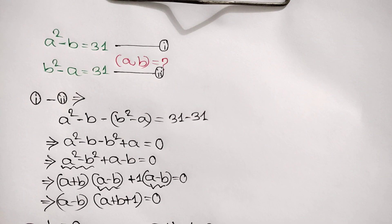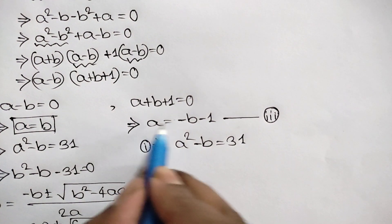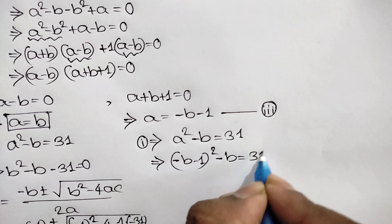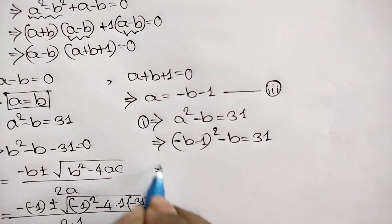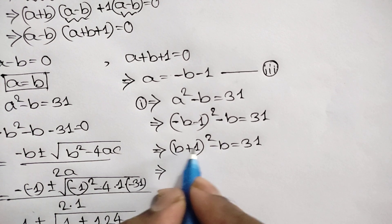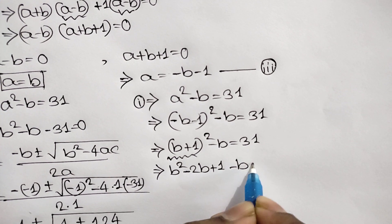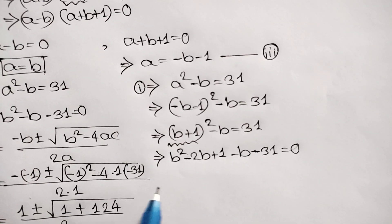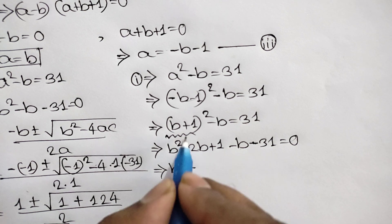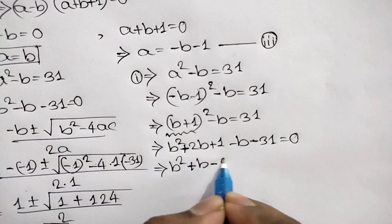Recalling equation 1, A squared minus B equals 31. Since A equals negative B minus 1, we substitute to get (negative B minus 1) squared minus B equals 31. Since squaring removes the negative, we write (B plus 1) squared minus B equals 31, which expands to B squared plus 2B plus 1 minus B minus 31 equals 0, giving B squared plus B minus 30 equals 0.